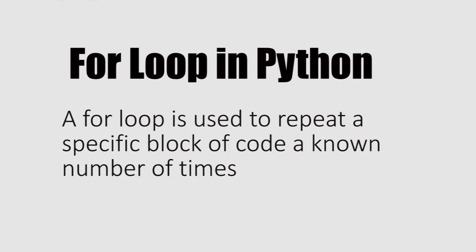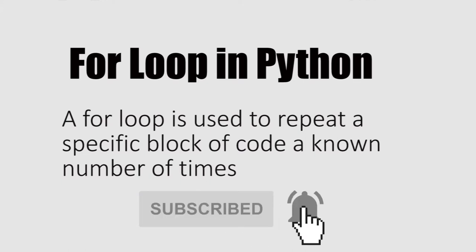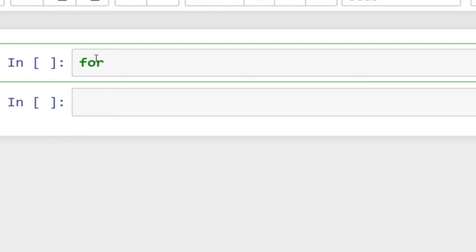I talked about while loops in the previous tutorial — a while loop basically repeats a block of code as long as the condition is true. But for loops are used to repeat a specific block of code a known number of times. So if you know the number of times that code is supposed to run, you can go with the for loop.